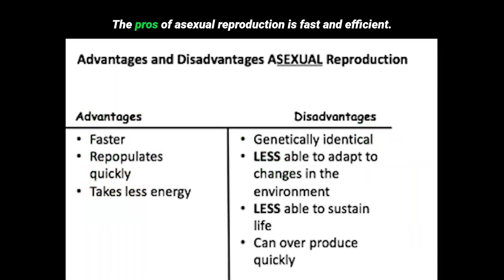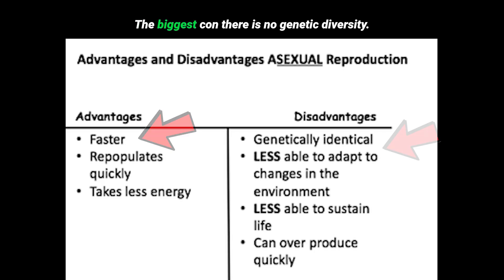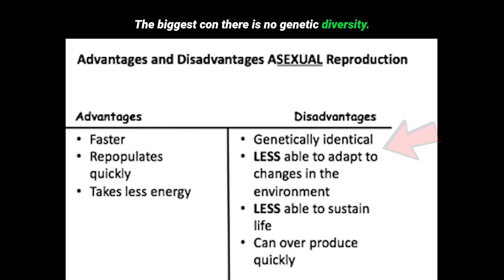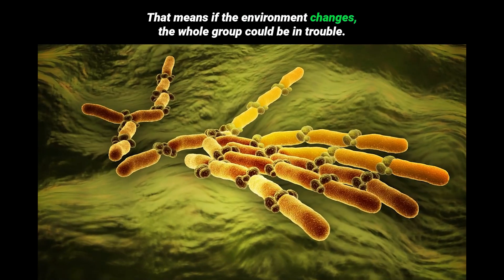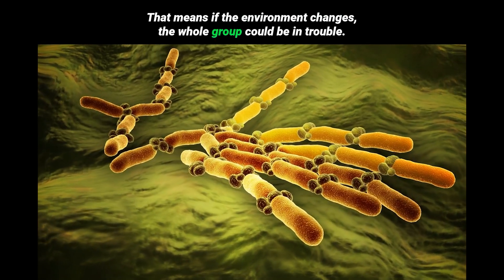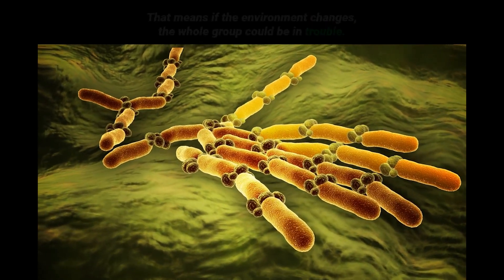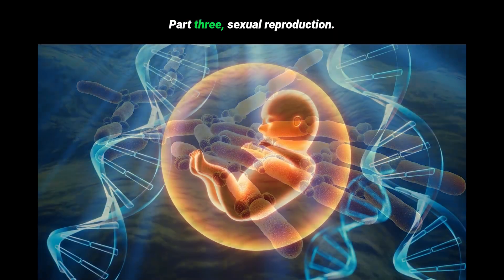The pros of asexual reproduction? It's fast and efficient. The biggest con? There is no genetic diversity. That means if the environment changes, the whole group could be in trouble.